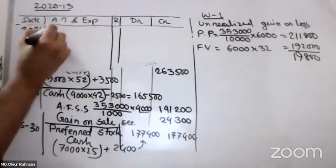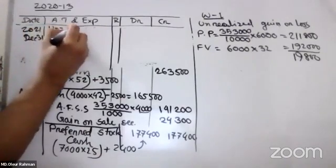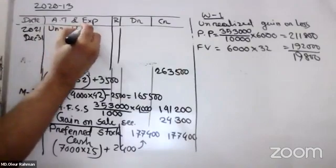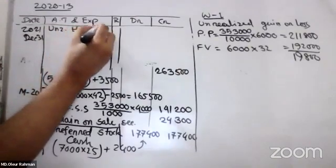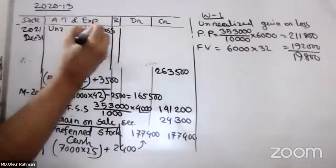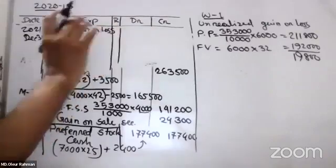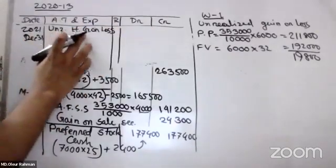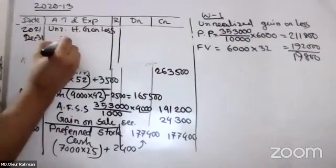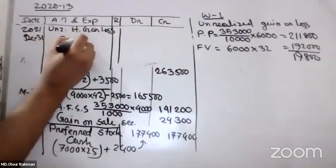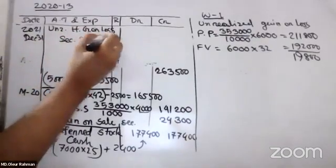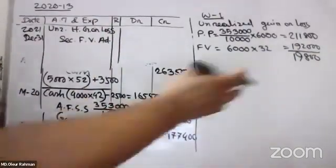Loss. Unrealized holding gain or loss — debit. Security fair value adjustment — credit.